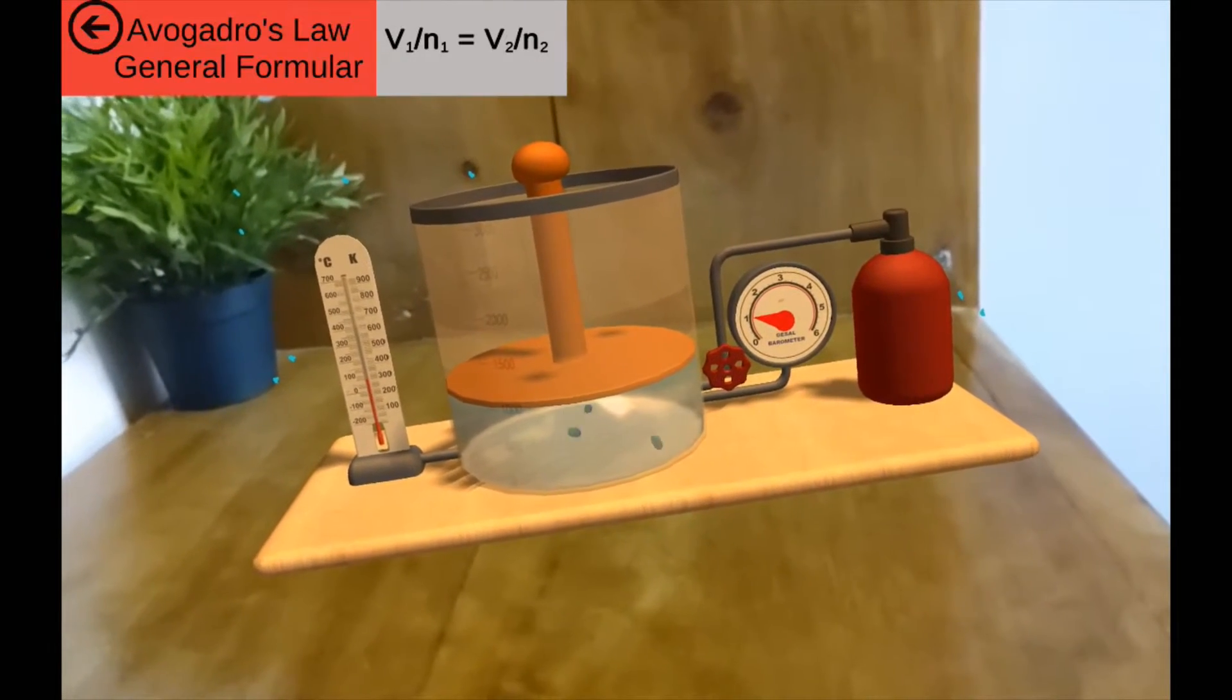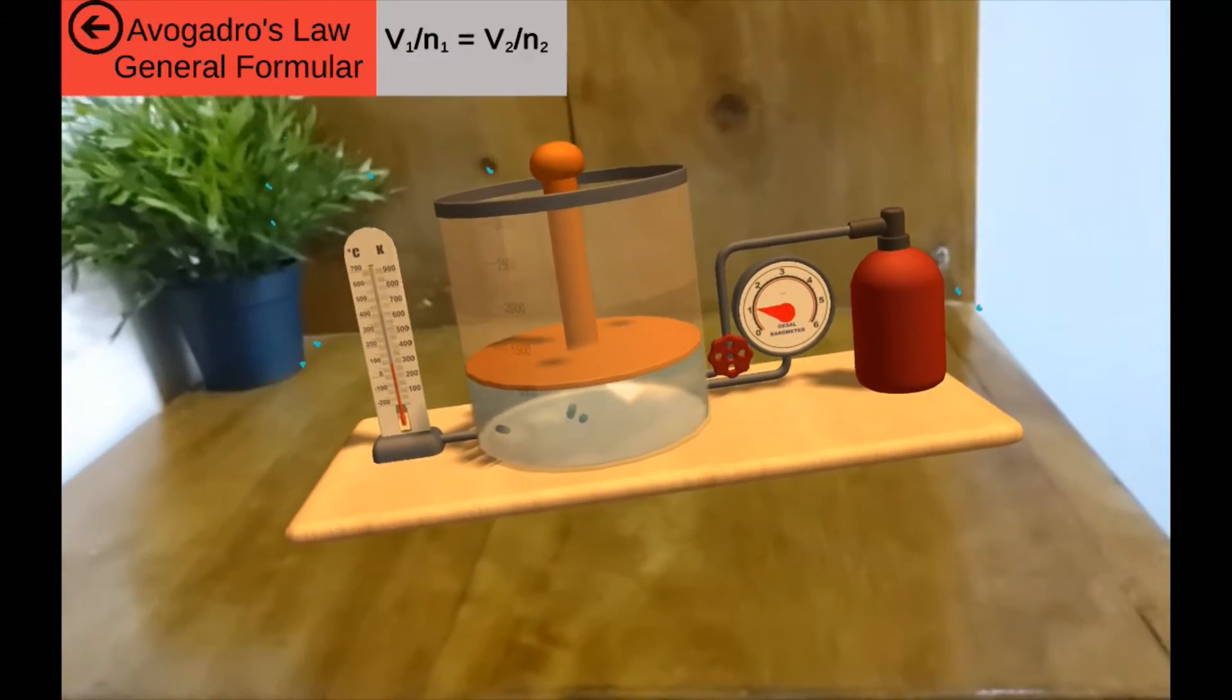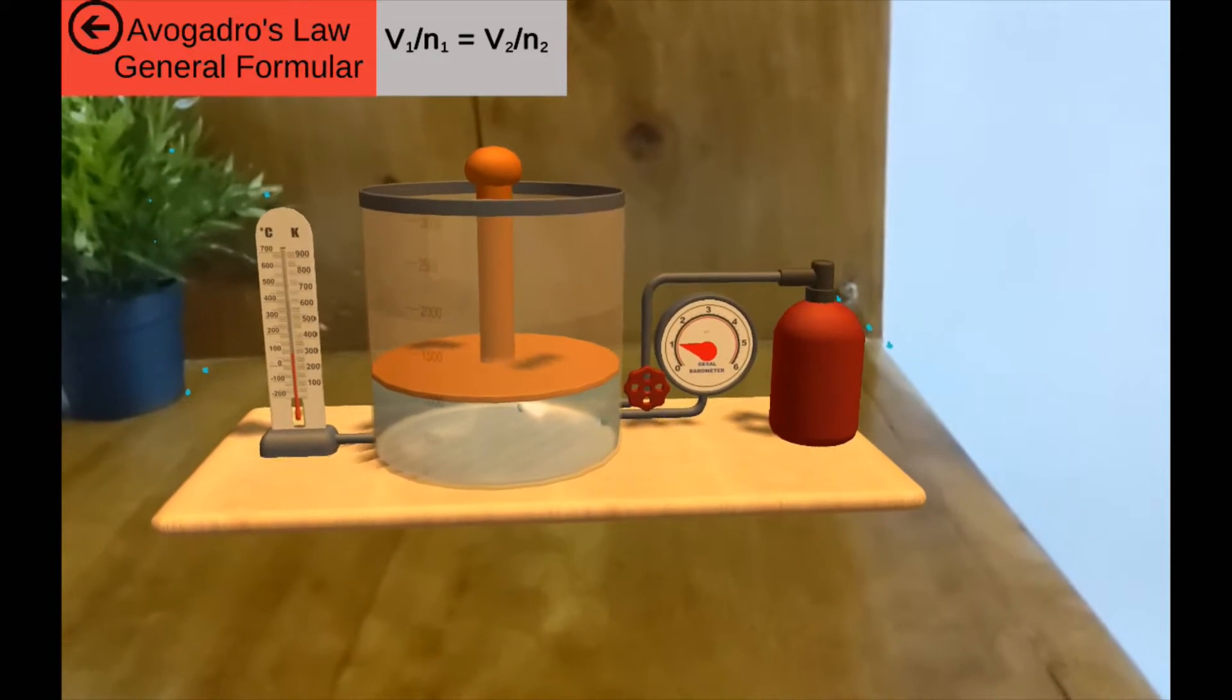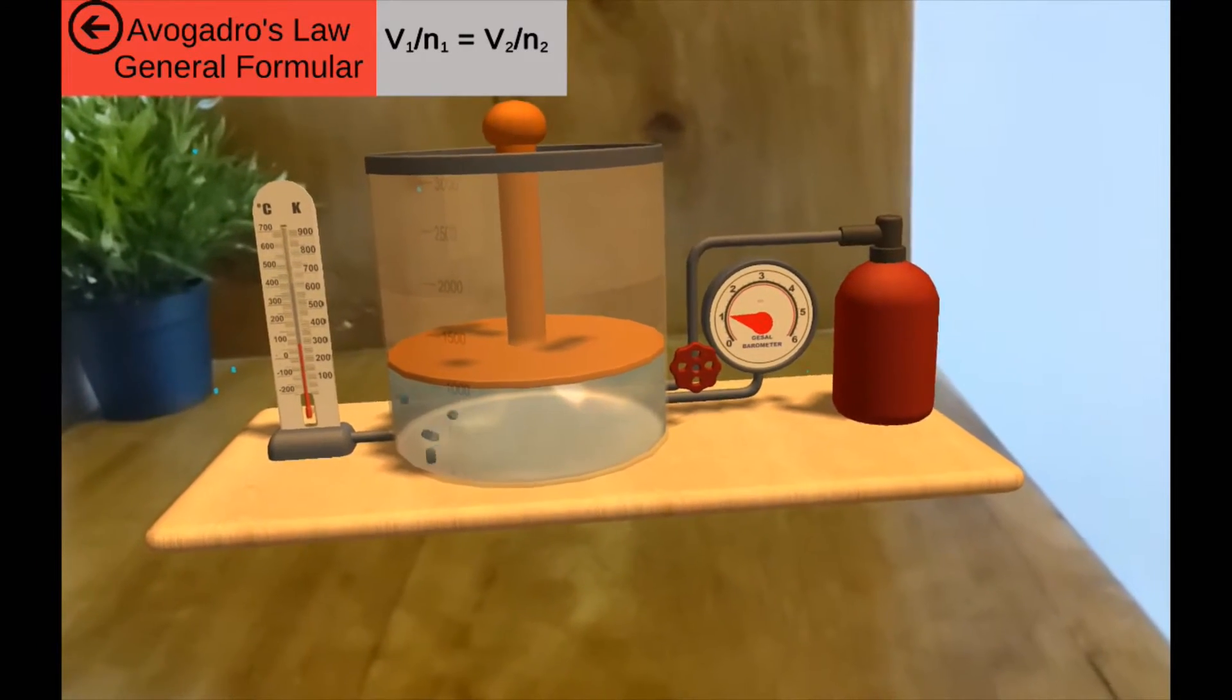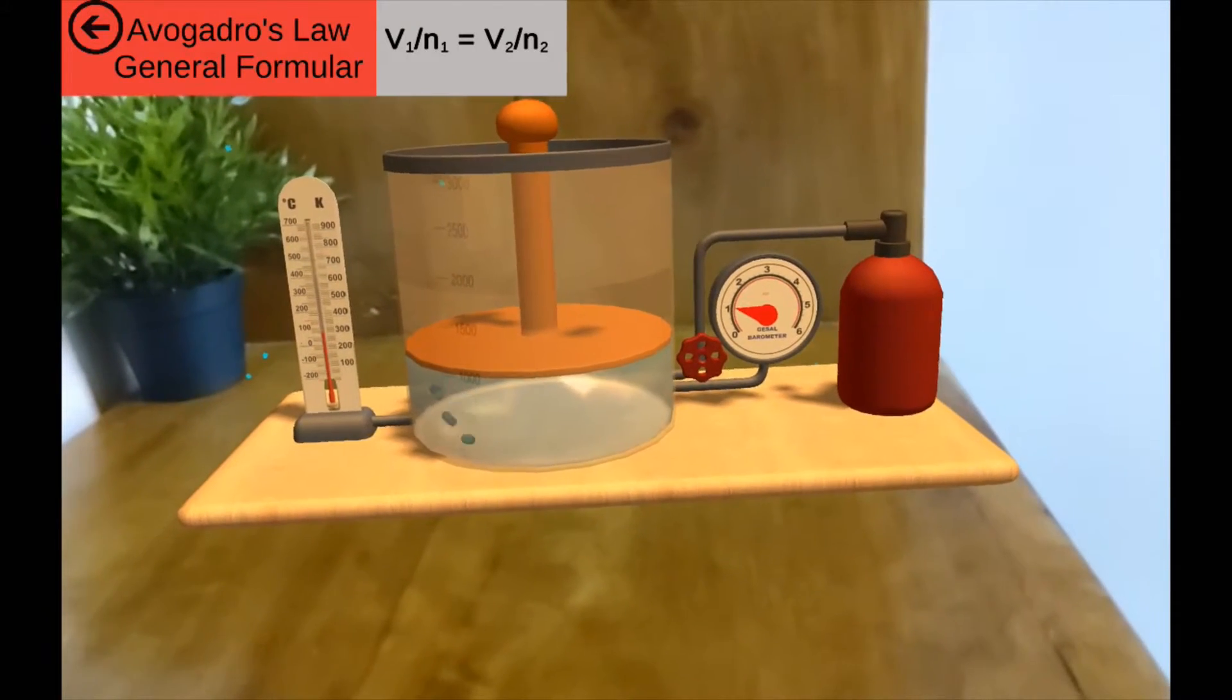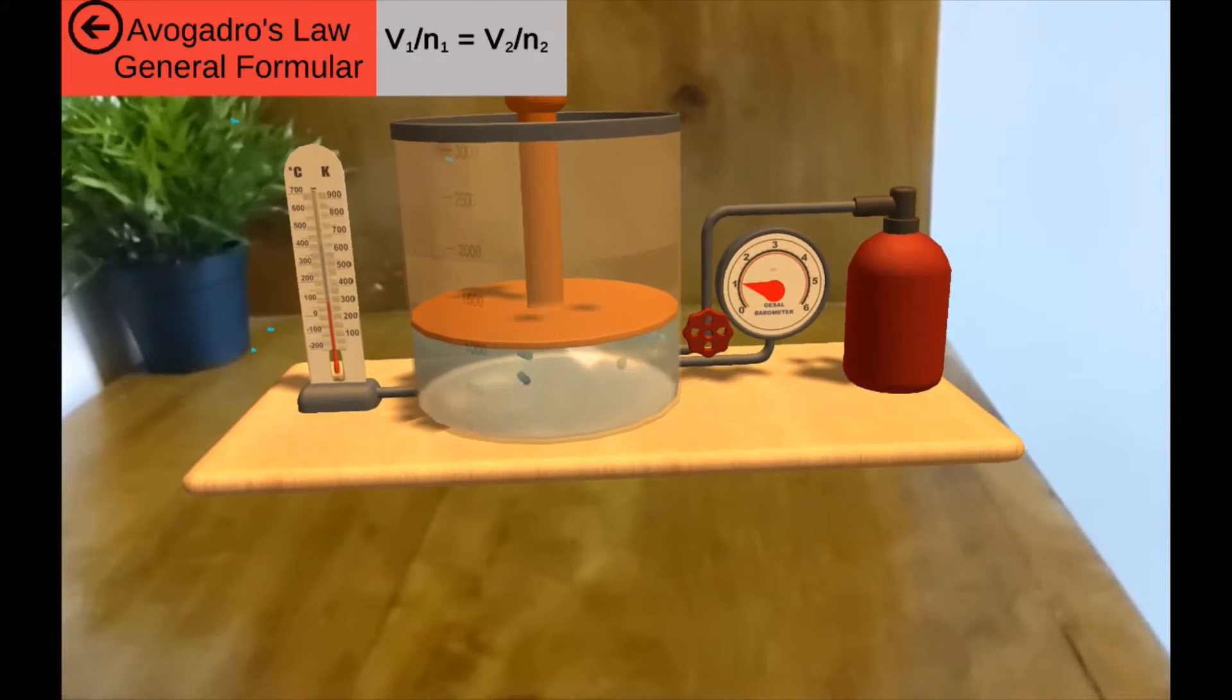They are pressure and temperature. You may ask yourself if we keep the pressure and temperature constant, what then do we vary with the volume? Well, you probably have heard the term number of moles before. Yeah, that's what we're varying our volume with.